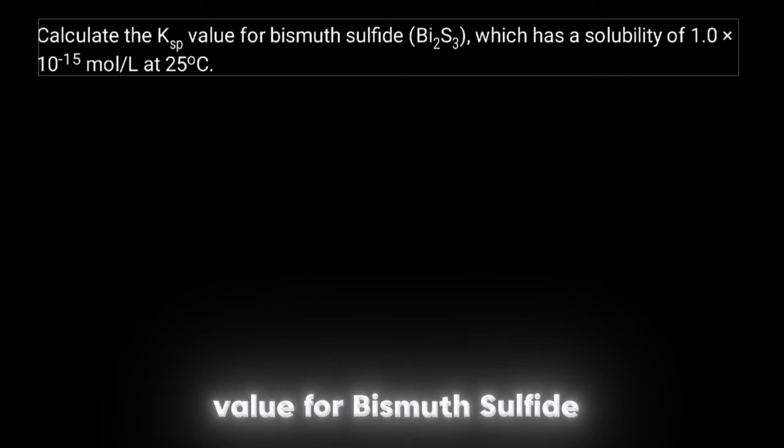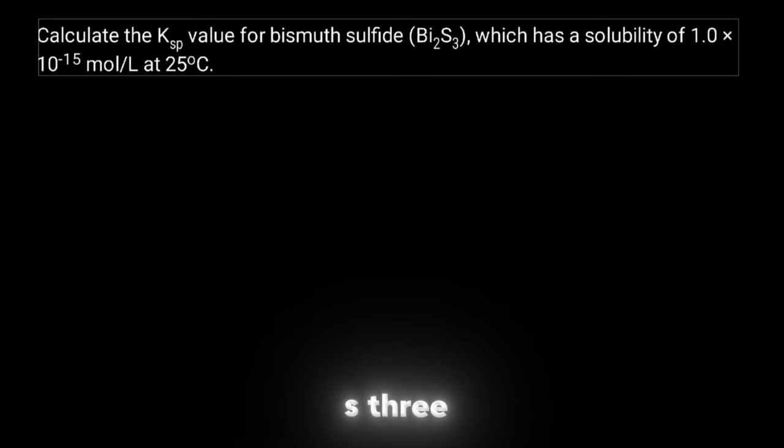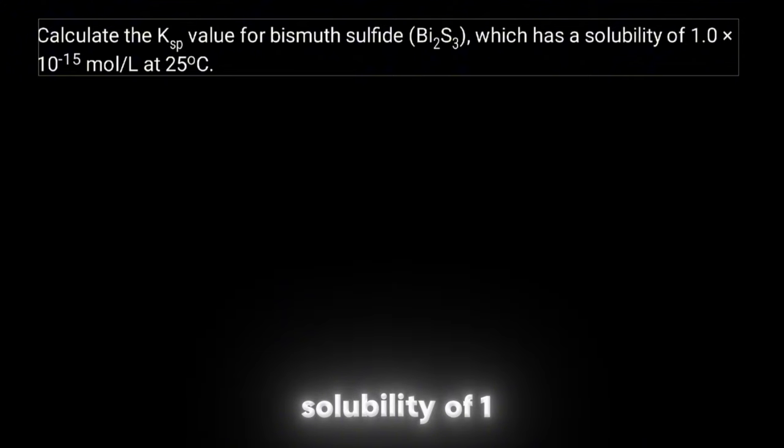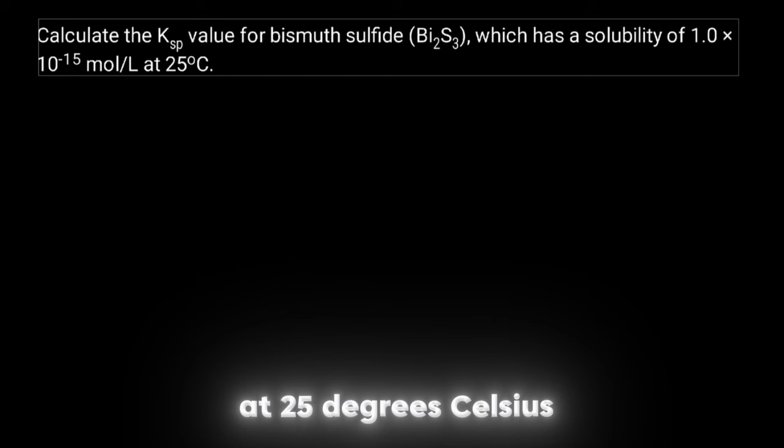Calculate the KSP value for bismuth sulfide Bi2S3 which has a solubility of 1 times 10 to the negative 15 mole per liter at 25 degrees Celsius.